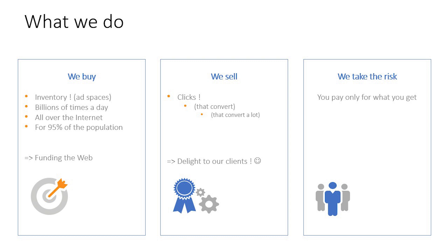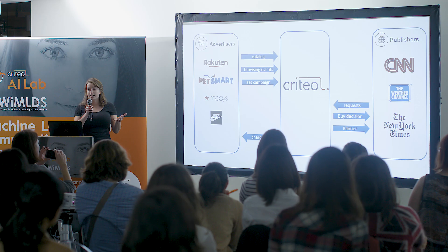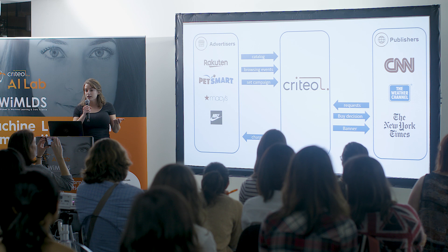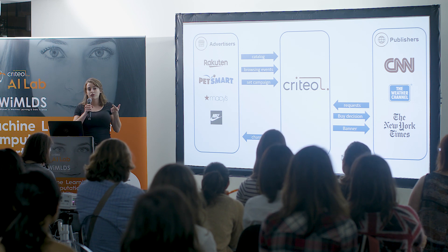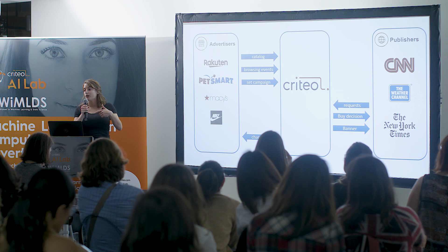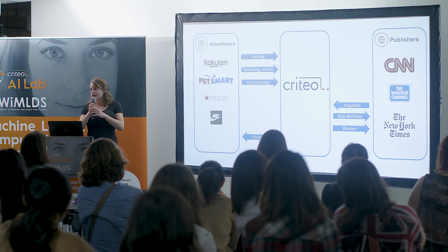We don't want to sell clicks that don't convert. We work with advertisers — they will provide us their catalog, all the product data, all the browsing events, everything that happened on their website, and they will set their campaign. They can have several types of campaigns: retargeting, where they want to target users they already know that have already been on their website to make sure they buy on their website and not the competitors. And also acquisition campaigns, where the goal is to reach new users that have never been on your website, where Criteo may have data they don't have to target the right users.